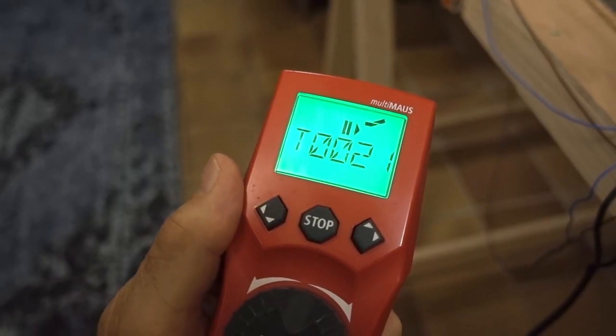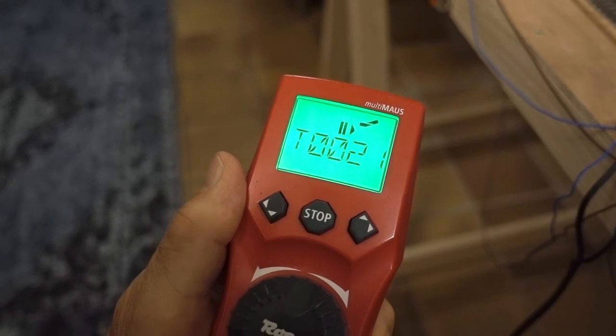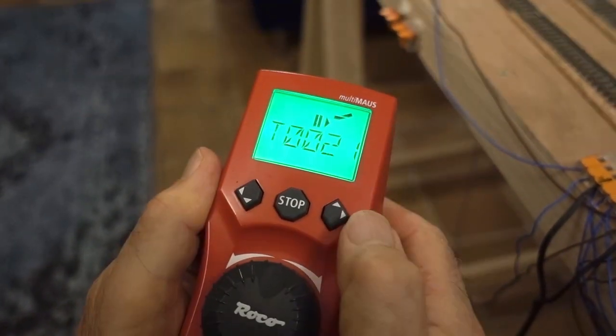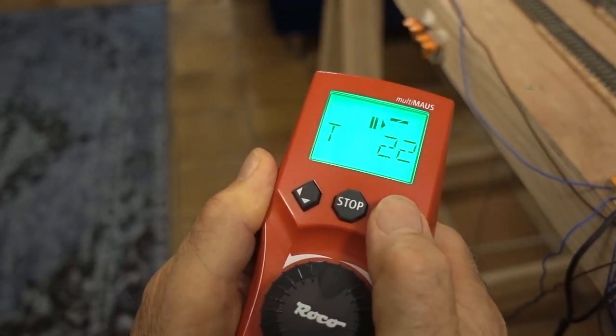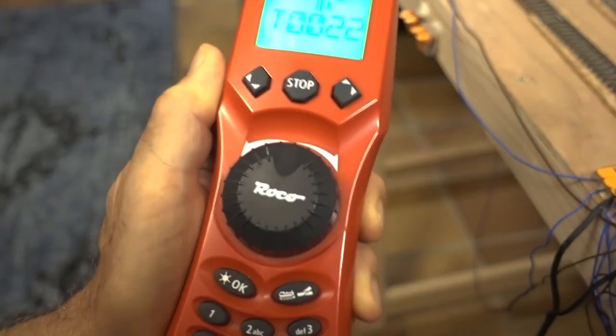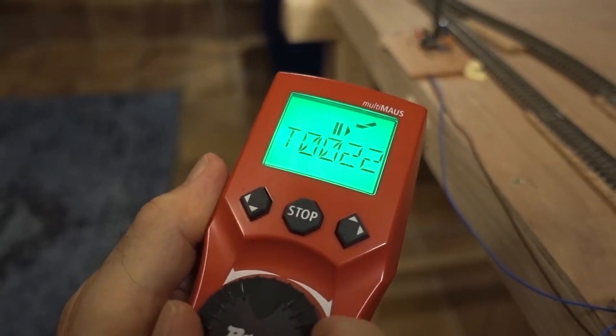If, on the other hand, you don't want the signal to return to green after the train has exited from the block, then this is how you tackle it. You change the address to 22 and set the turn signal like that. Now this sets the system so that it doesn't return to green. And I'll demonstrate that now.